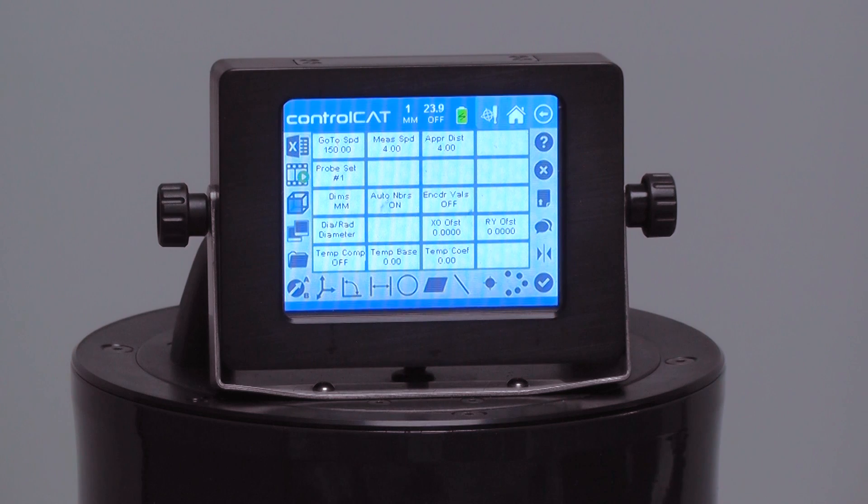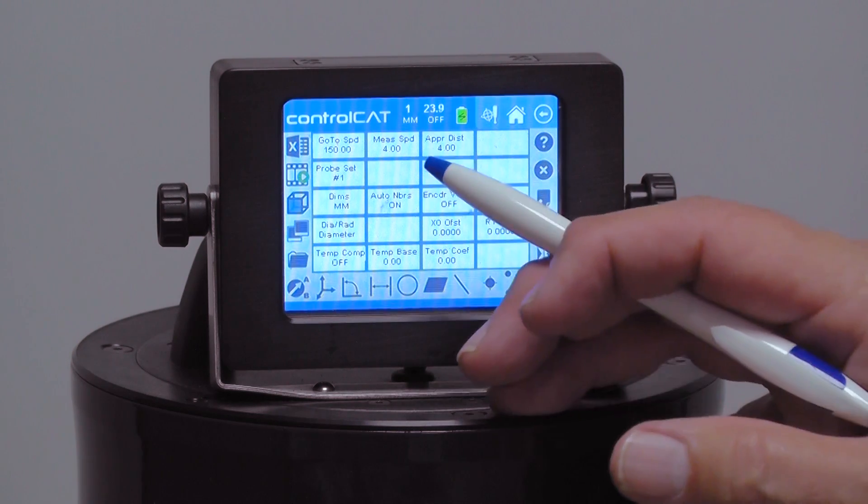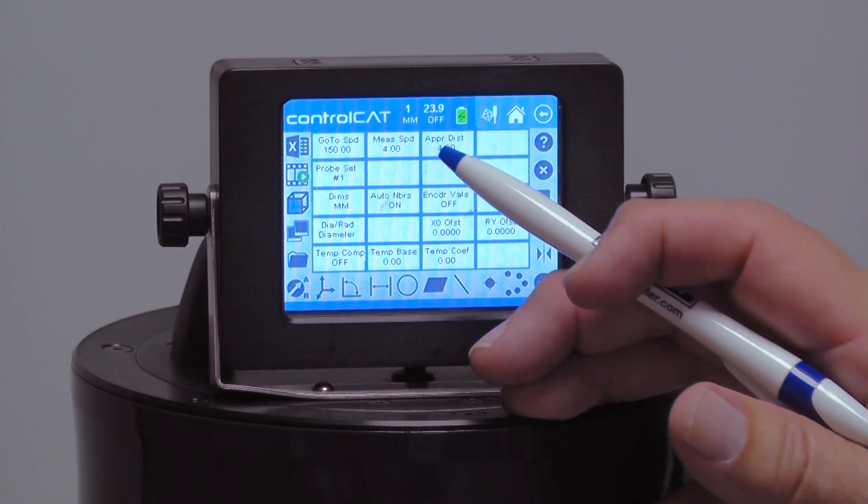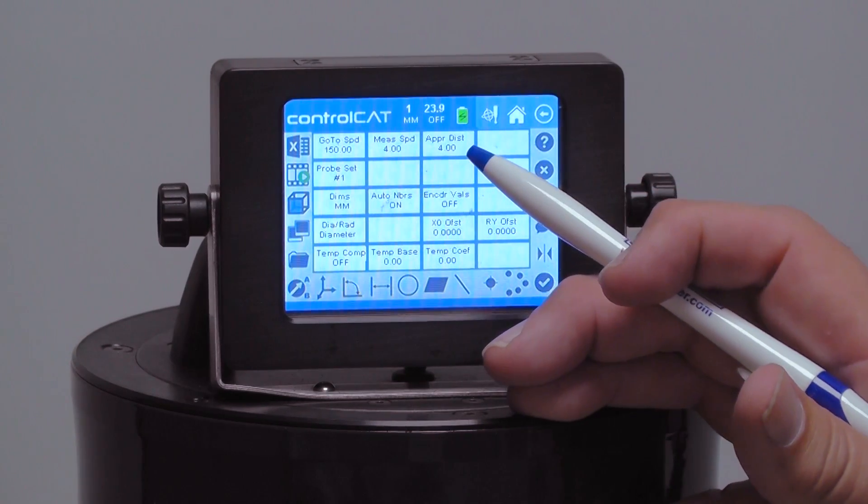It has a measurement speed of four millimeters per second. This will slow down when it gets within a certain range to take a probe hit, and then it will take measurements at four millimeters per second. The approach distance is that distance that it will start slowing down, and that's set at four millimeters per second.